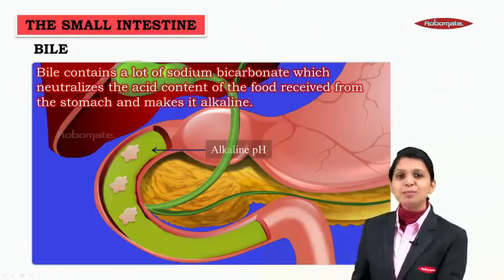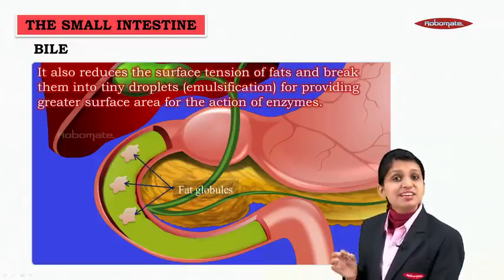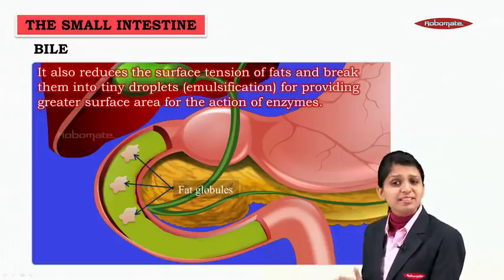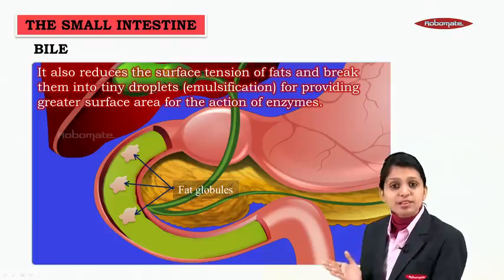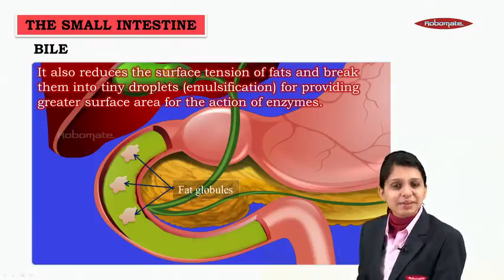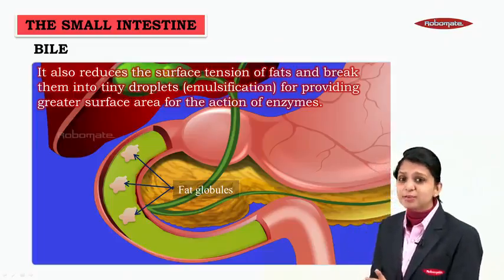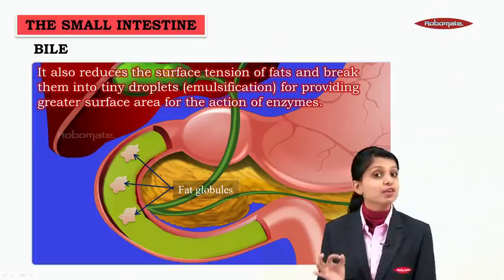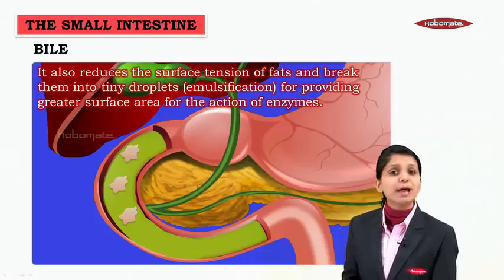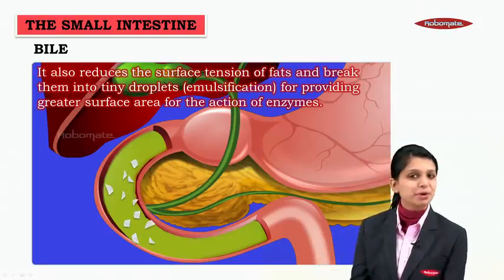The bile juice, when transported from the gallbladder, makes the food alkaline. It also reduces the surface tension of fats and breaks them into tiny droplets. This process is called the emulsification of fats, providing a greater surface area for the action of enzymes.